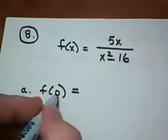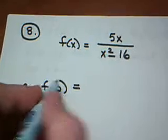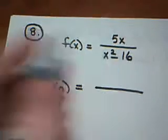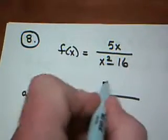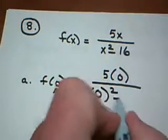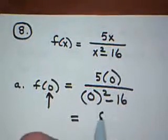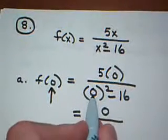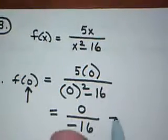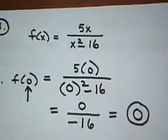When I'm asked to find f of 0, remember this value, 0 is an x value, it's input. So I go to my function, and every place I see an x, I plug in a 0. So I have 5 times 0 divided by 0 squared minus 16. And then I do the arithmetic. 5 times 0 is 0. In the denominator, 0 squared, of course, is 0. 0 minus 16 is negative 16. And 0 divided by negative 16 would give me the answer 0. So I do get an answer, and the answer is 0.